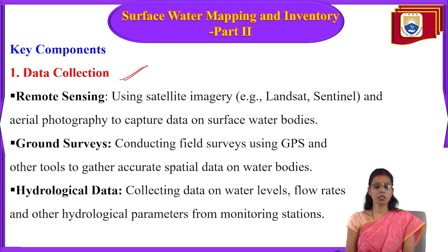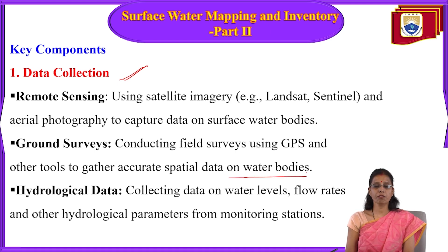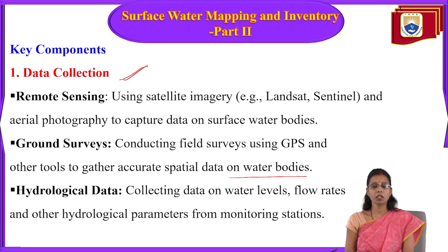The second method is ground surveys — conducting field surveys using GPS and other tools to gather accurate spatial data on water bodies. By going to ground locations with these devices, you can collect spatial and non-spatial data and link it to surface water.